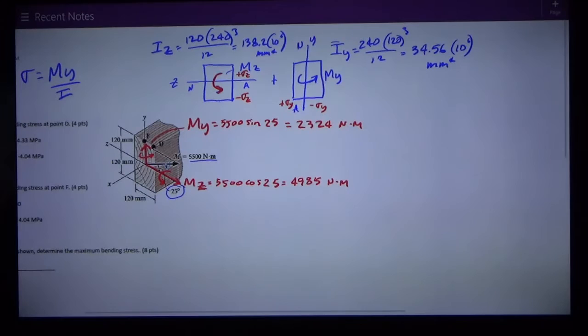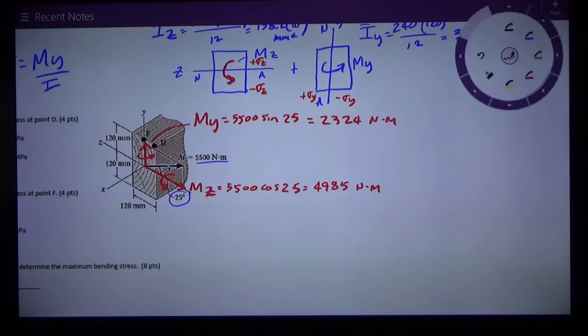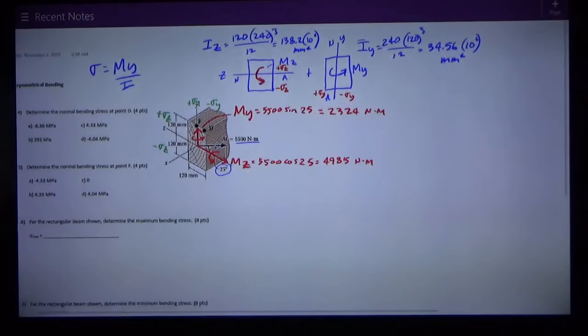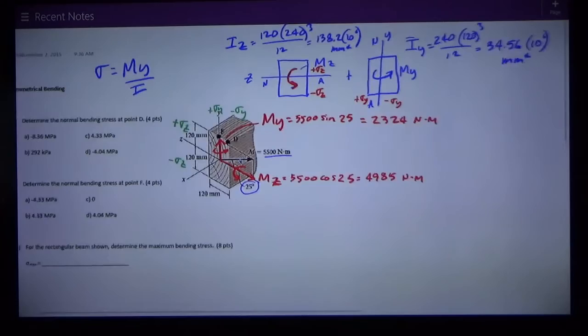Now I'm set up with this divided into two problems and I've got quadrants of stress. On the top of the section I have positive σz, below the neutral axis I have negative σz, to the left I have positive σy, to the right I have negative σy. Now I just need to plug into my formula the distances from the neutral axis for each one of these cases.